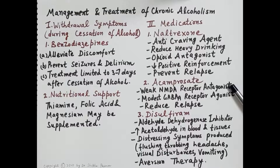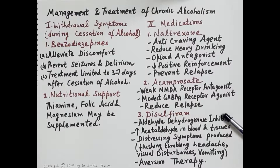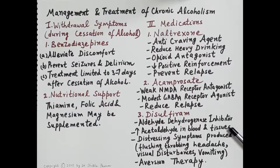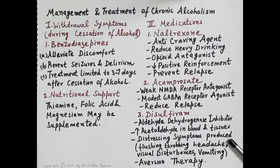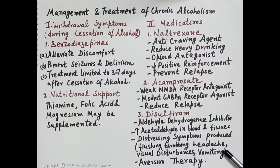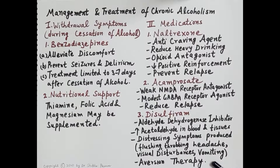Another important drug is acamprosate. It is a weak NMDA receptor antagonist and a more modest GABA-A receptor agonist, and it reduces relapse. Another very important drug is disulfiram, which is an aldehyde dehydrogenase inhibitor. When alcohol is consumed, disulfiram inhibits its metabolism, causing accumulation of acetaldehyde in the blood and tissues. This acetaldehyde produces distressing symptoms like flushing, throbbing, headache, visual disturbances, and vomiting — causing the person to avoid alcohol. Therefore, disulfiram is known as an aversion therapy.